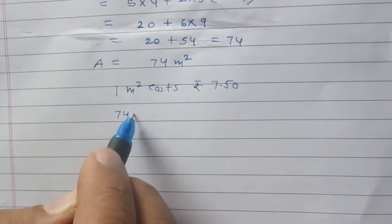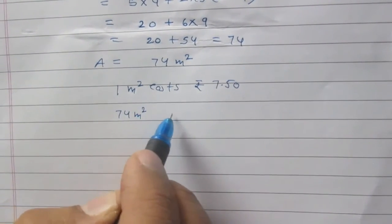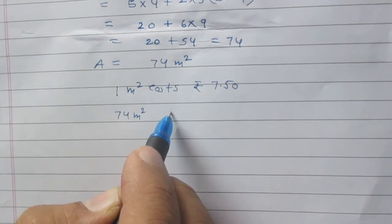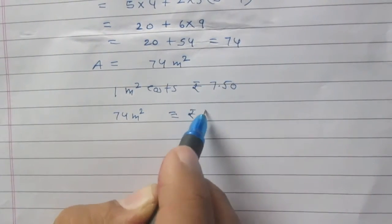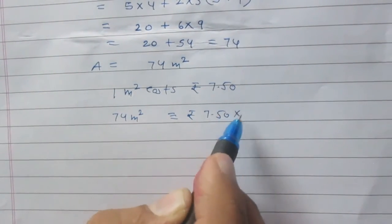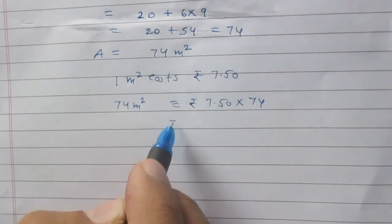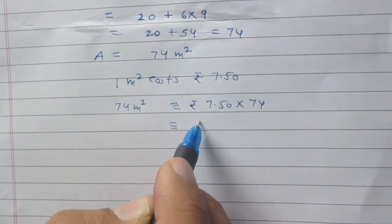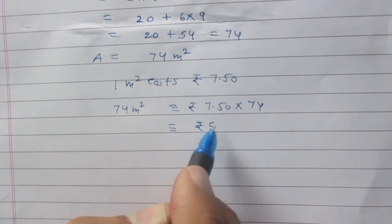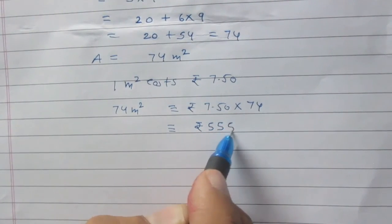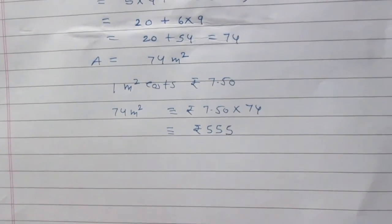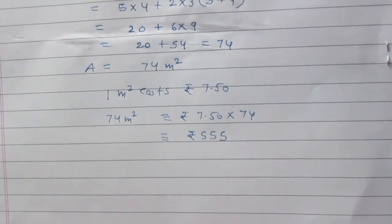So, 74 meter square of area will cost Rs. 7.50 multiplied with 74. We will get 555. So, we can say that cost of whitewashing the room is Rs. 555.